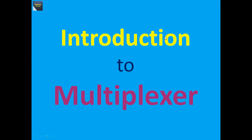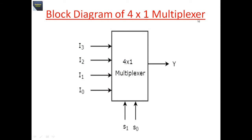The multiplexer is also called as MUX. It is a combinational circuit that has a maximum of 2 to the power n data inputs, n selection lines, and a single output line. One of these data inputs will be connected to the output based on the values of the selection lines.